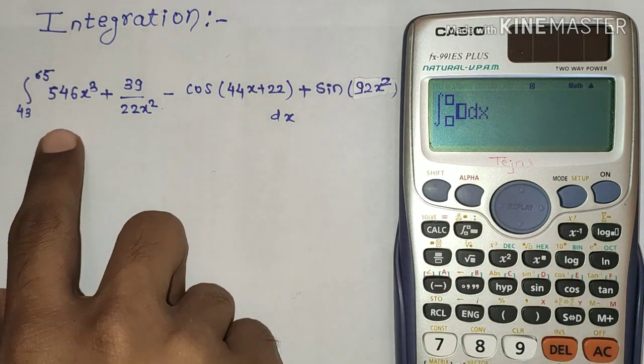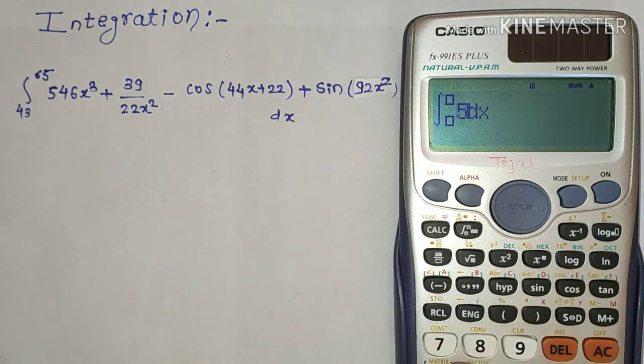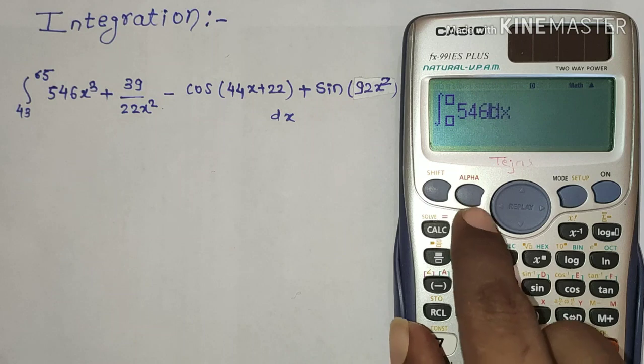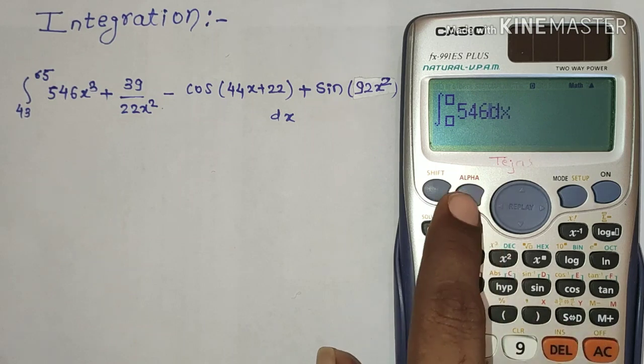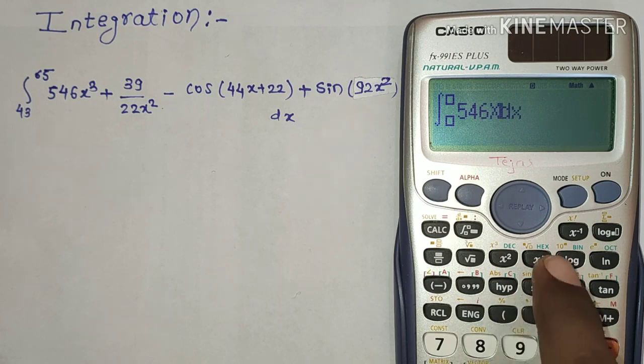Now here we have to put the equation in the form of x. So let's do 546x³. To get the x factor press alpha and press this bracket button. So here we got x, now cube.